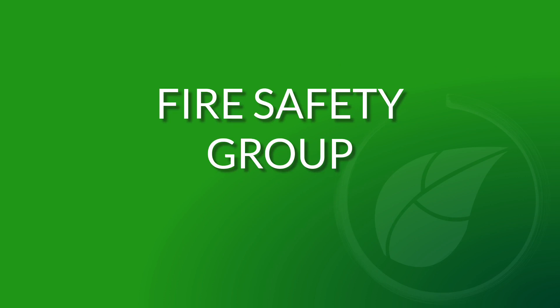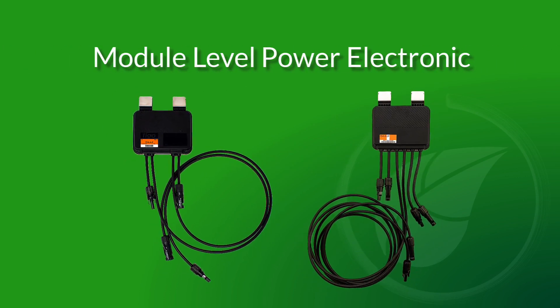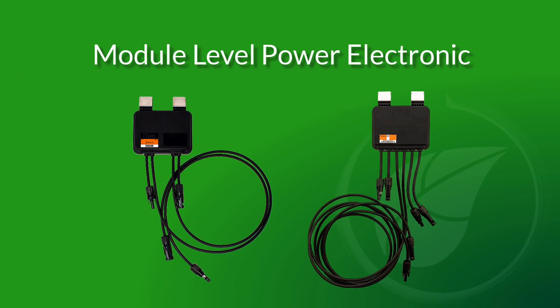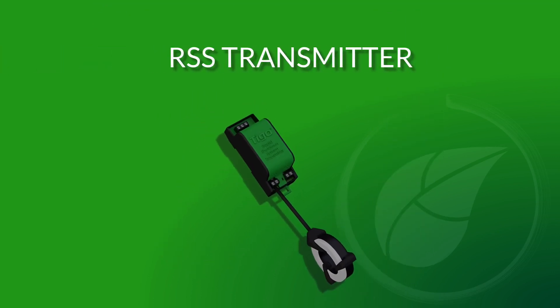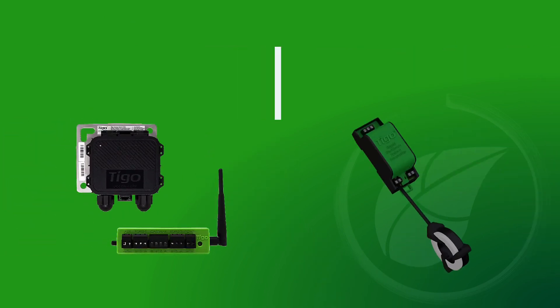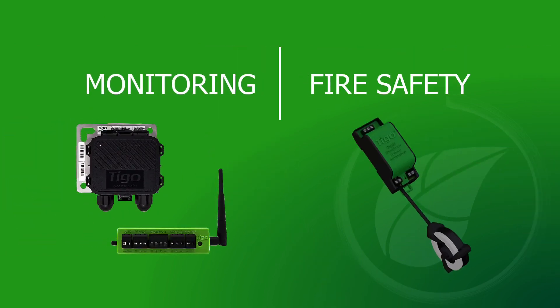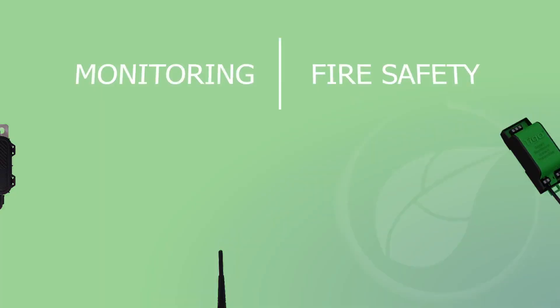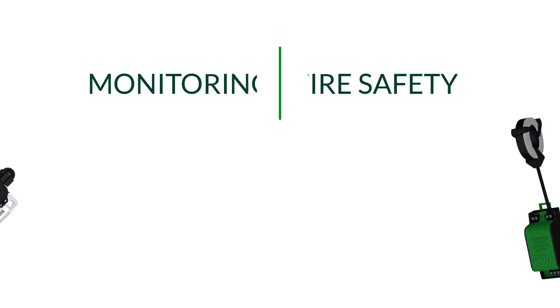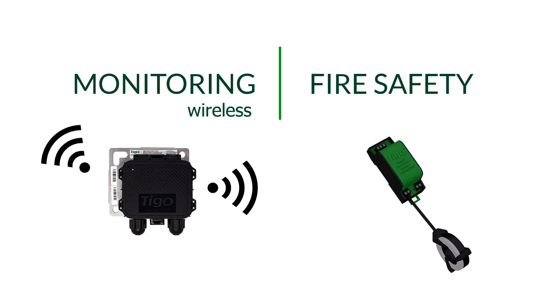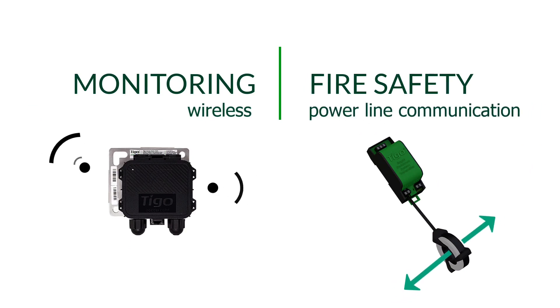The fire safety group consists of two key components: the TS4Fs and the RSS transmitter. The monitoring group and the fire safety group use different communication methods. The monitoring group uses wireless communication, and the fire safety group uses power line communication, or PLC.